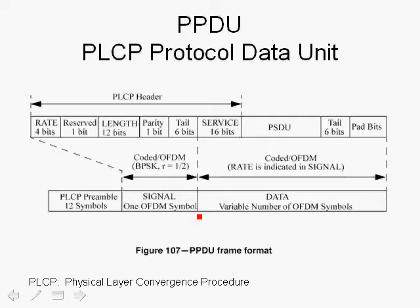Encoded in the signal field are 4 bits for the rate, 12 bits for the length, a reserve bit, a parity bit, and 6 tail bits in order to flush the convolutional encoder and drive the states to zero.